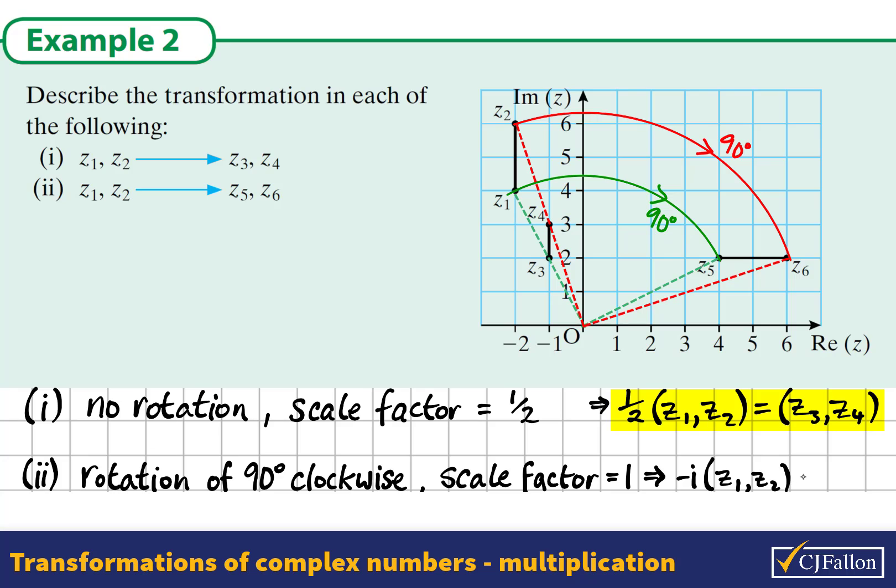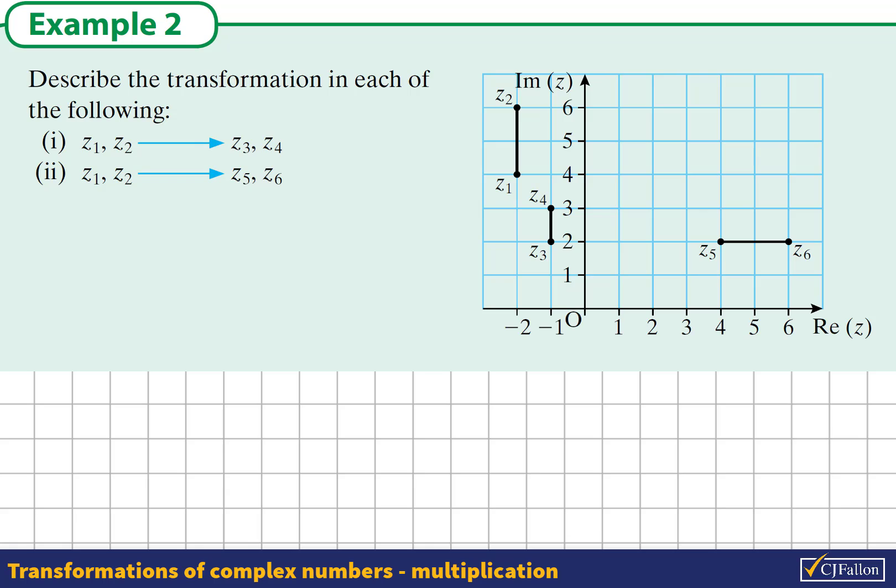I have taken a geometric approach to answering this question. You could also use the numbers available in the Argand diagram. So if you understand that there is multiplication involved here, we could say that Z5 is some multiple of Z1. Let's call that multiple k. So k must be equal to Z5 divided by Z1, k being our transformation multiplier.